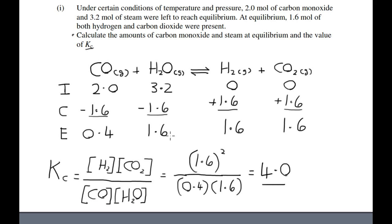Then you input the values from your ICE box, from the equilibrium part, and you end up with 1.6 squared divided by 0.4 times 1.6. If you do the math, you end up with a Kc value of 4.0 at a specific temperature.